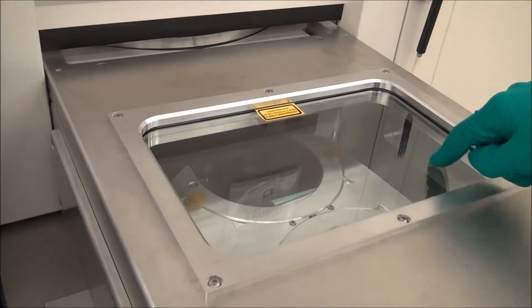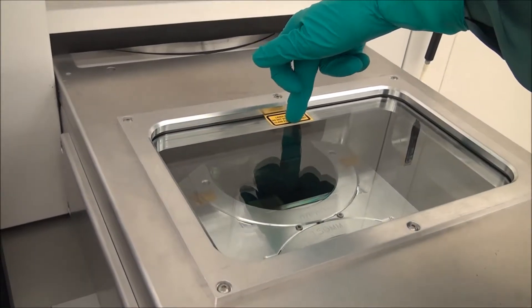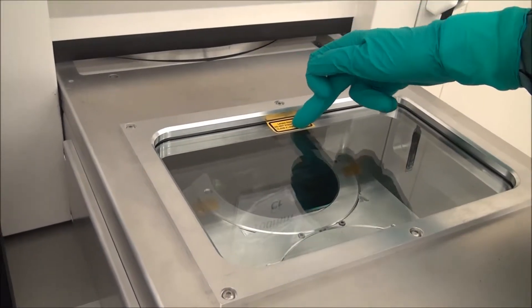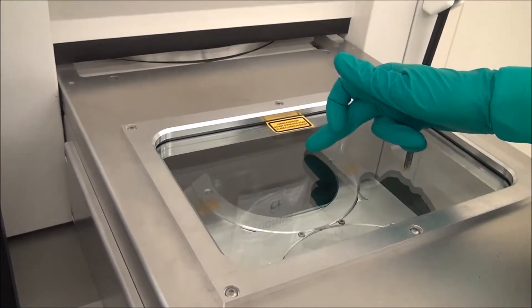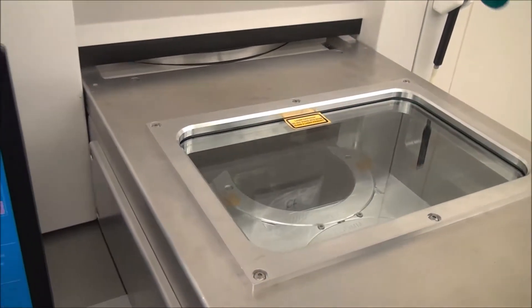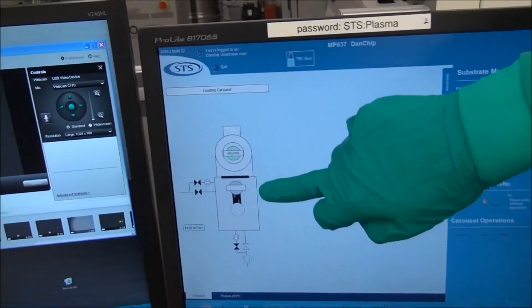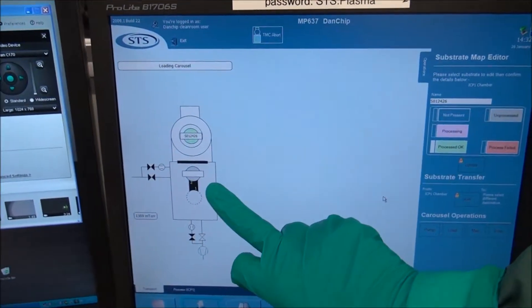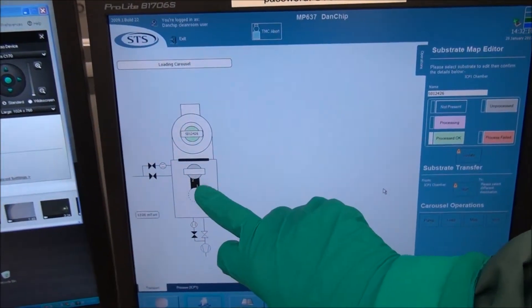The carousel spins around and there's a sensor that sits down here that will detect whether there's a wafer present or not in the slots. The wafer is indicated in the software, like this, and is given an ID.